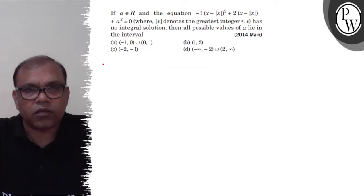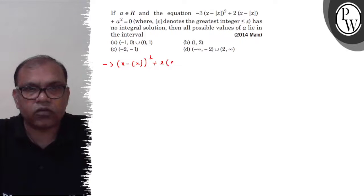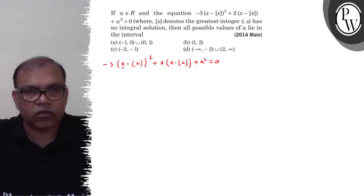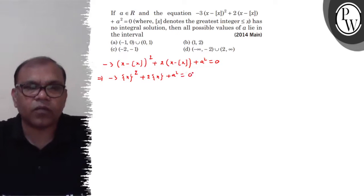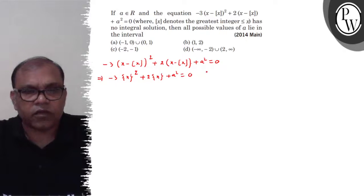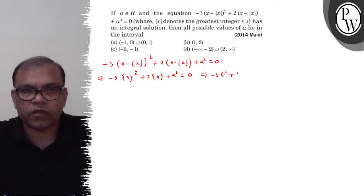तो देखो, जो equation में यह है: minus 3 into (x minus [x]) whole square plus 2 into (x minus [x]) plus a square equals 0. तो x minus [x] को आप देख सकते हो, यह fractional x है। तो यह equation बन जाएगा: minus 3 (fractional x)² plus 2 (fractional x) plus a² equals 0. Fractional x को हमने suppose कर लिया t. अब यह बन जाएगा: minus 3t² plus 2t plus a² equals 0.